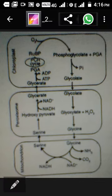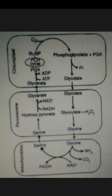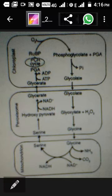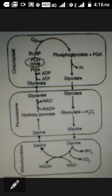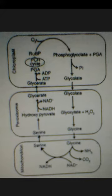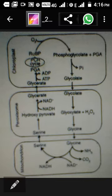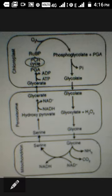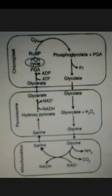The next step occurs in the peroxisome. This glycolic acid moves to the peroxisome where it gets converted into glyoxylic acid. Then glyoxylic acid is converted into glycine and alpha-ketoglutaric acid. This glycine then moves to the next organelle, that is the mitochondria.